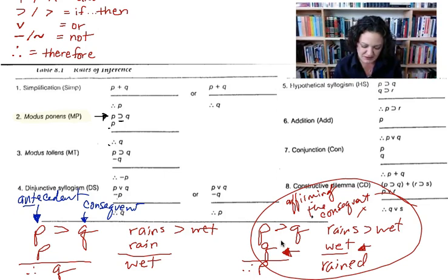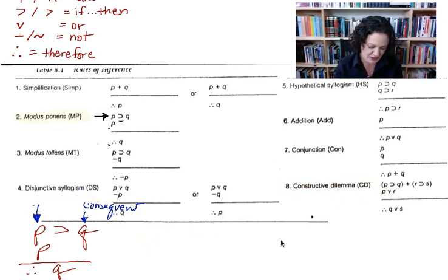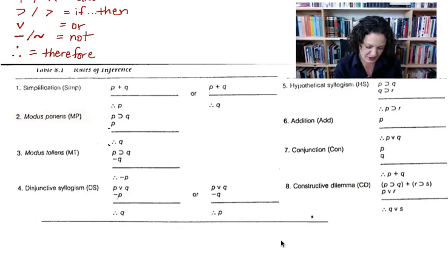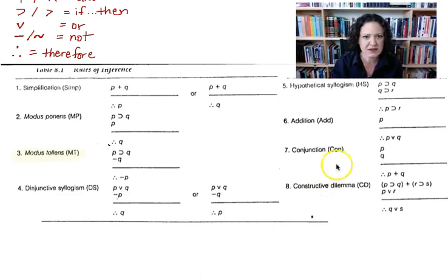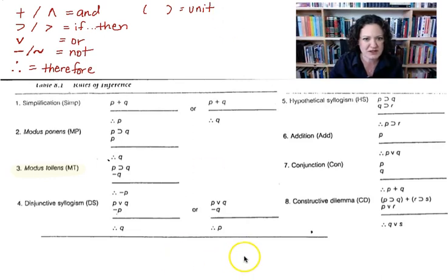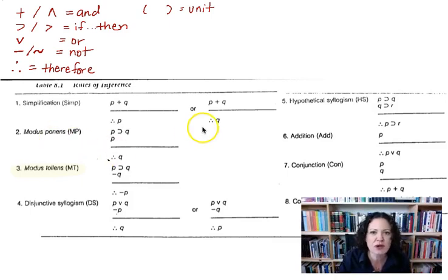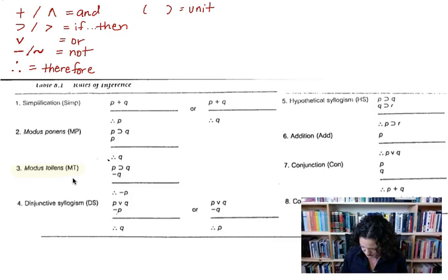That's modus ponens — the good version. Now we're going to look at modus tollens. Modus tollens is the mode of negation, where modus ponens was the mode of positing. Modus tollens says: if P then Q — again we have our antecedent and consequent — not Q, denying the consequent, therefore not P.